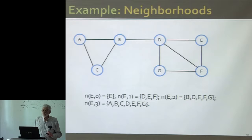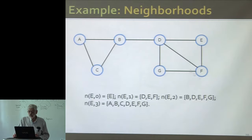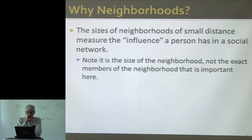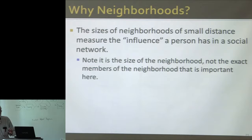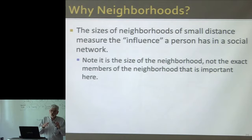Here's the graph we were talking about just a while ago. Node e: neighborhood at distance 0 is just e itself. Neighborhood at distance 1 you get d and f as well. At distance 2 you get g and b. And by distance 3 you've got all the nodes — the neighborhood is the entire graph. Not very deep. The motivation here is: if you want to decide who to give an iPad to, you give it to somebody who has a large neighborhood at some small distance. You just want to know the size of the neighborhood.